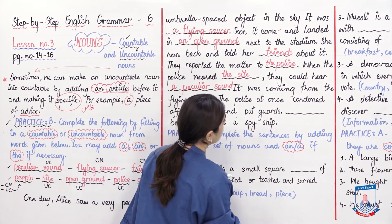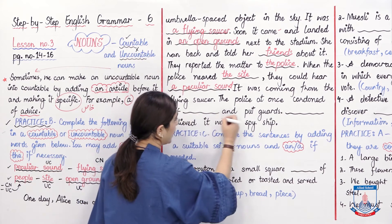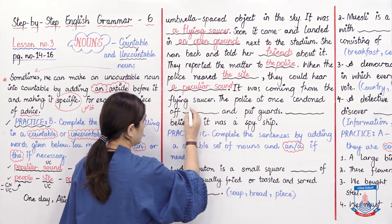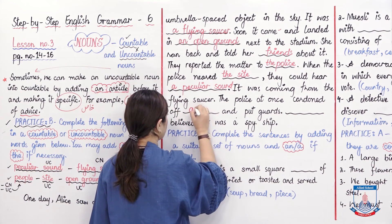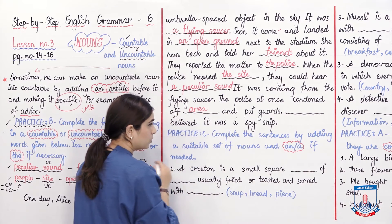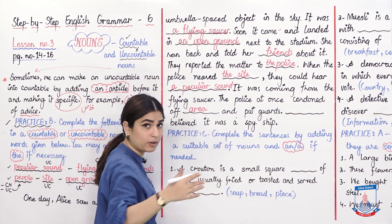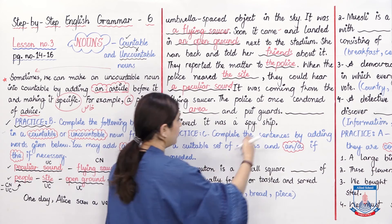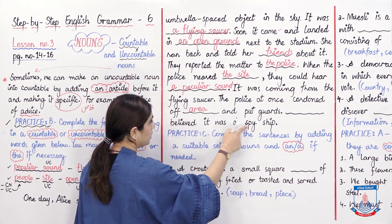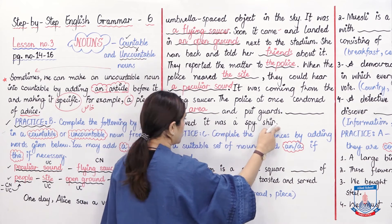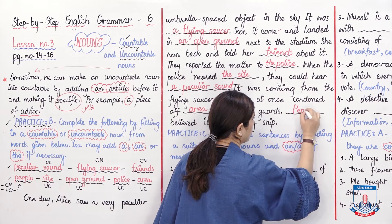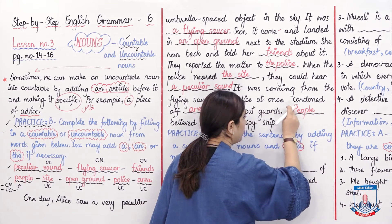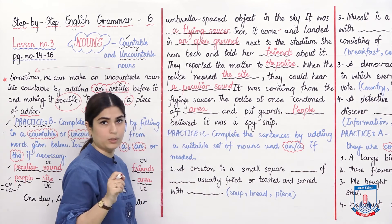'It was coming from the flying saucer. The police at once cordoned off' — 'area' — 'and put guards.' The entire area was closed off. 'People believed it was a spy ship.' No article is needed before 'people' here.